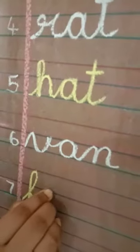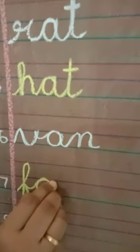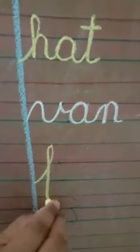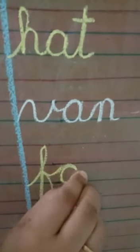Now, next one is fan. What is the spelling of fan? Fan. F says f, A says a, N says n. F-A-N fan. Write here. F-A-N fan.